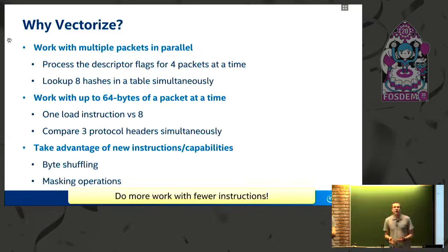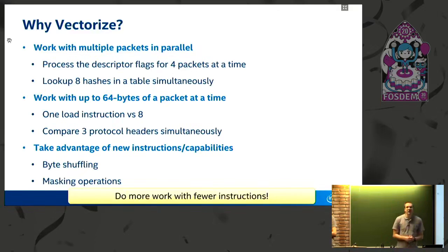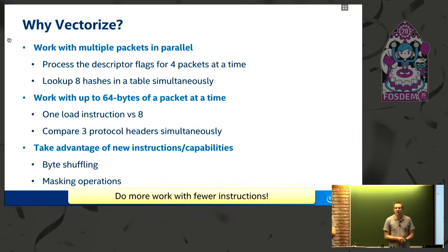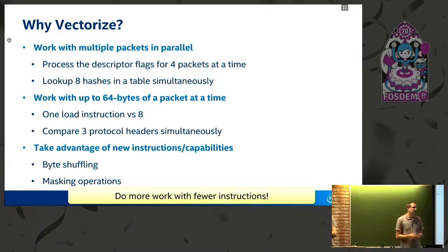If you look on the internet for vectorization and SSE, you'll find a lot of examples doing vector additions and matrix multiplies. There's not a lot of matrix multiplies done in packet processing normally — there's a lot of packet header processing though, which is considerably different. So why would we want to vectorize? Why would we want to use these SIMD instructions?